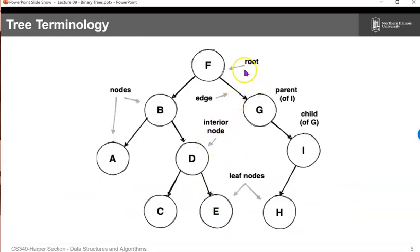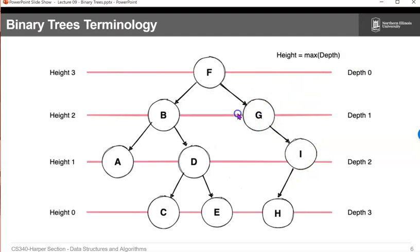So here's some terminology. Here we've got the root of the tree. They're connected by edges, just like with a graph. We've got nodes, which are the actual elements. We've got an interior node, which means it's not a leaf node. A leaf node is one that has no children. We have node i, which is a parent of g, and g is also called the parent.